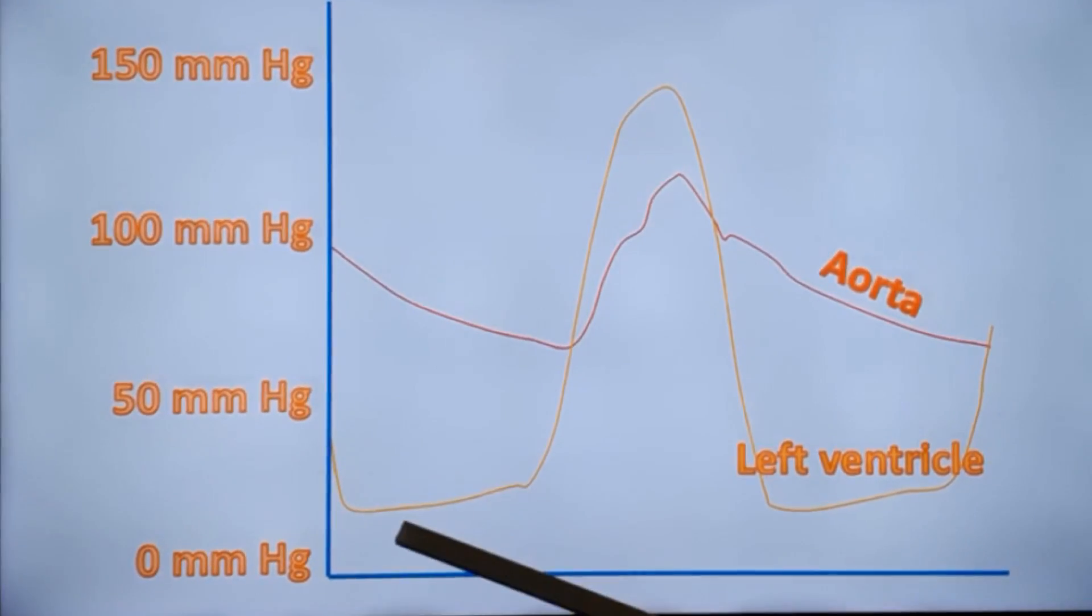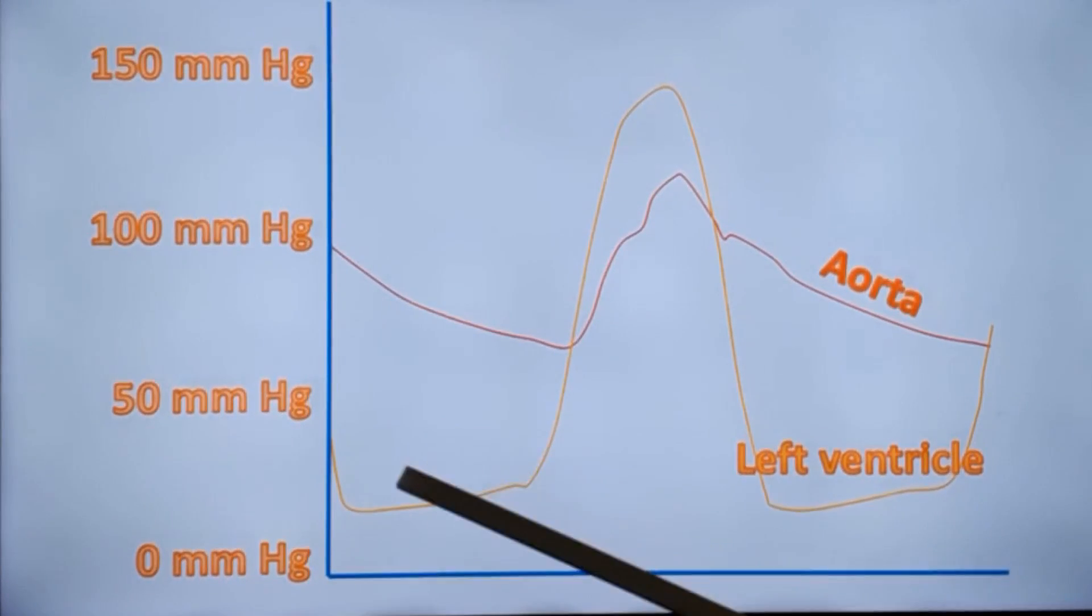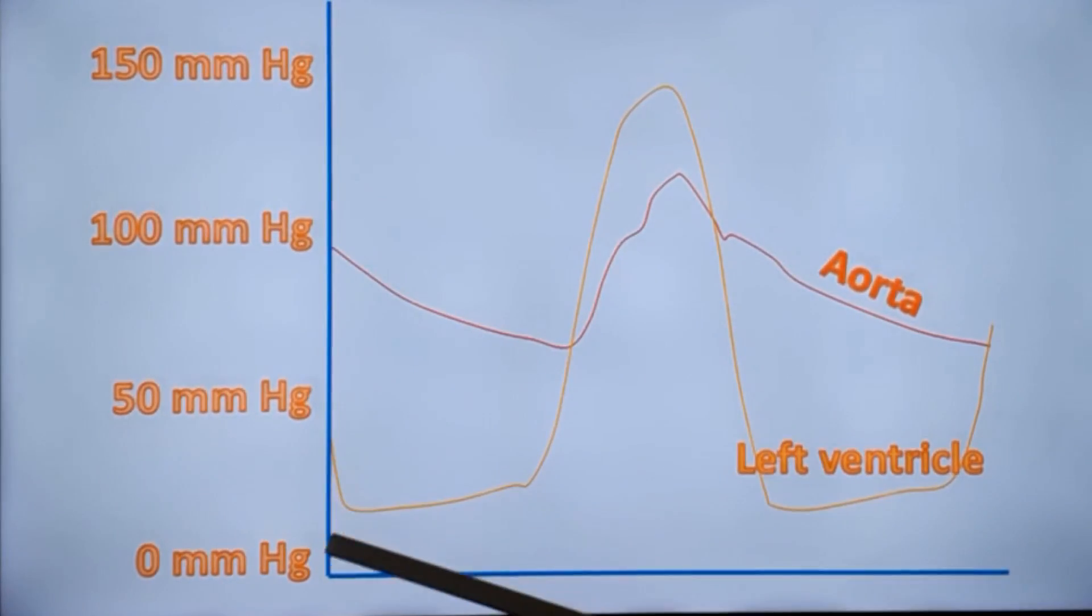This is a drawing, not an exact tracing from the left ventricle and aorta. It is a drawing to illustrate the features. This is the pressure scale in millimeters of mercury, and this axis will be time.